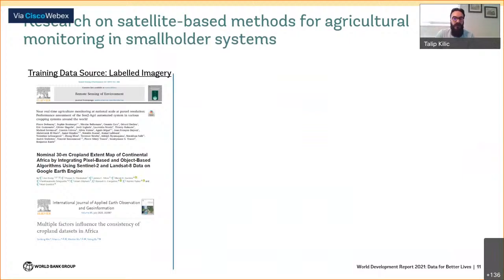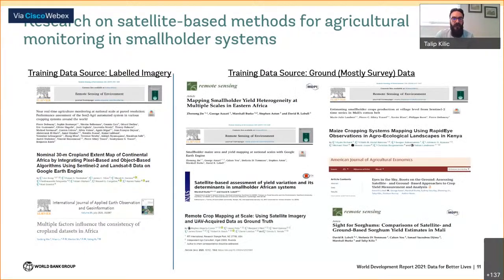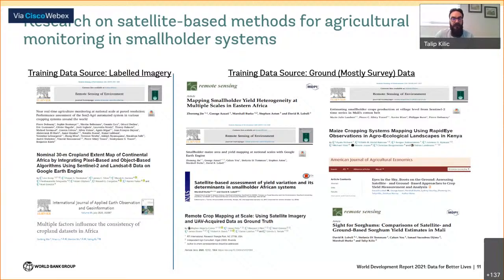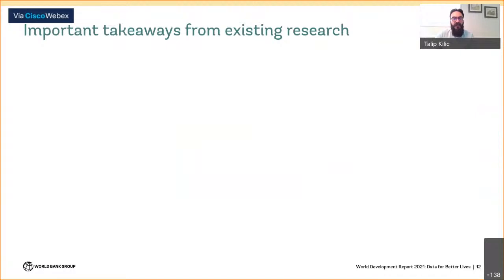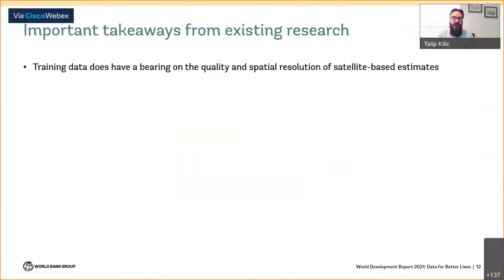Recent research has shown the feasibility of satellite-based monitoring of agricultural outcomes in smallholder farming systems. Published papers can be grouped into two bins based on training data sources: the first strand uses manually labeled satellite imagery for land cover types, and the second strand uses geo-referenced ground data from existing or new household and farm surveys to train and validate remote sensing models for crop area mapping and yield estimation. Today's talk relates to this second strand of earth observation applications.